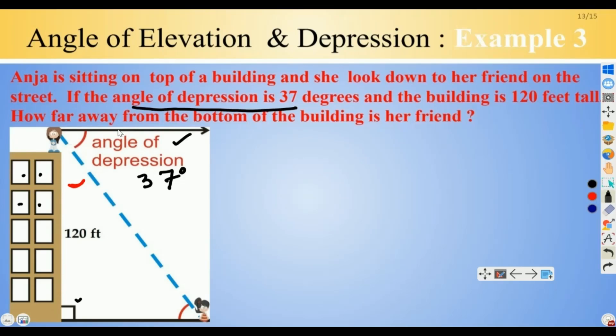Now, as soon as you put this horizontal line over here, you can see that this is the angle of depression that we are looking for. In fact, Anya is looking down from the horizontal.